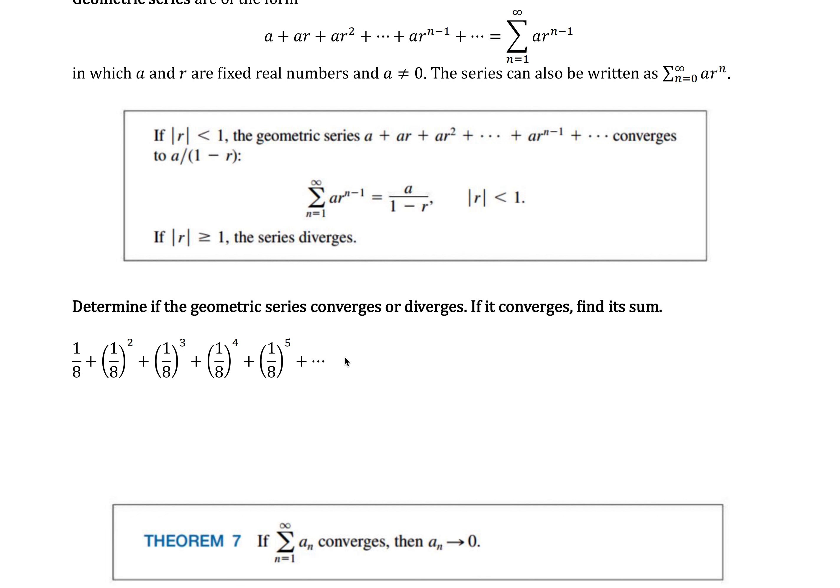You could think of this as the a value being 1/8 and then the r value is also going to be 1/8. So this would be 1/8 plus 1/8 times 1/8 to the first power plus 1/8 times 1/8 squared and so on. So I could write this in the sigma notation.